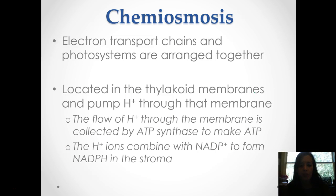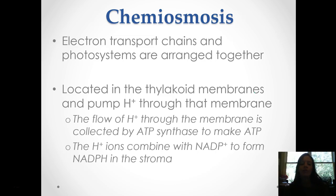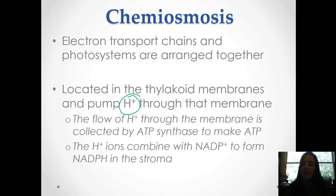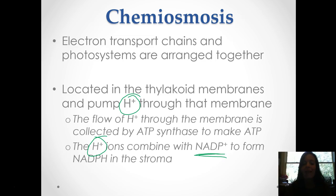Chemiosmosis is when the electron transport chains and photosystems are arranged together. They're located in the thylakoid membrane and they pump hydrogen ions through that membrane. Hydrogen ions are H+, so those are constantly moving across the membranes. This flow is collected by something called ATP synthase, and that's what makes all that ATP that the cell needs for energy. These H+, because they have a positive charge, also combine with NADP+, and that's where we form NADPH as well.